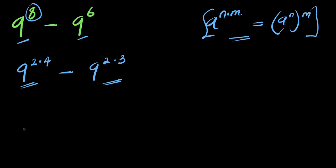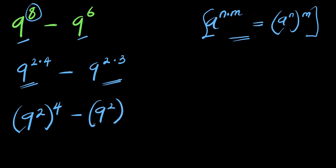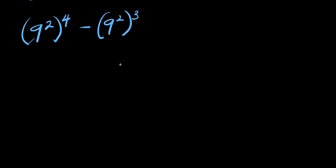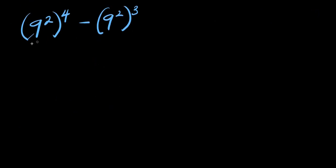And here, I'm going to have 9 power 2 raised to the power of 4, minus 9 power 2 raised to the power of 3. So from here, 9 power 2 is simply 9 times 9, that is 81. So I have 81 to the power of 4 minus 81 to the power of 3.